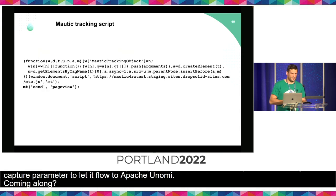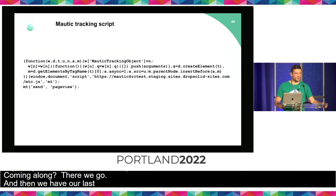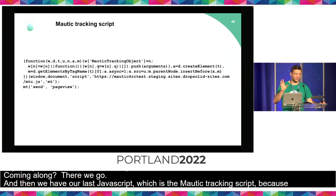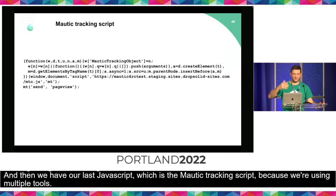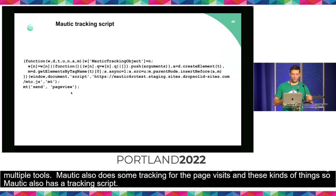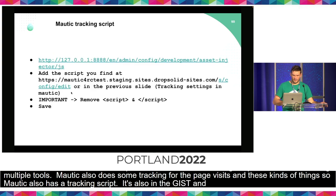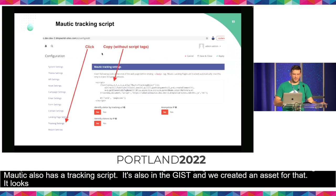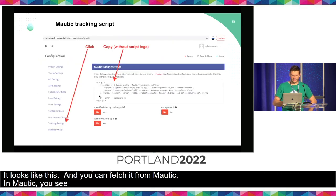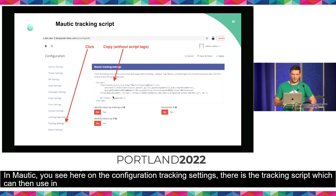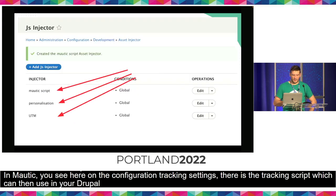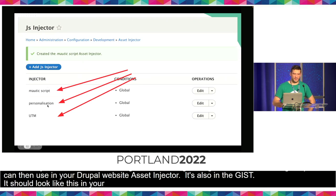And then we have our last JavaScript, which is the Mautic tracking script. Because we're using multiple tools, Mautic also does some tracking for the page visits, so Mautic also has a tracking script. It's also in the GIST, and we also create an asset for that in Drupal. You can fetch it on Mautic — in Mautic, on the configuration tracking settings, there is the tracking script which you can then use in your Drupal website in the Asset Injector. You should have the Mautic script, the personalization script, and the UTM script.